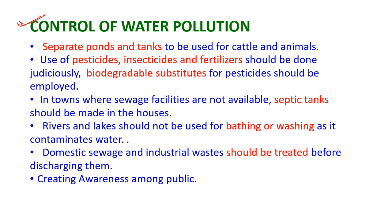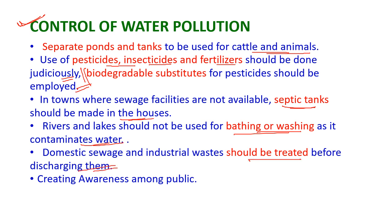Control measures of water pollution: separate ponds and tanks should be used for cattle and animals. Use of pesticides, insecticides and fertilizers should be done judiciously, and biodegradable substitutes for pesticides should be employed. In towns without sewage facilities, septic tanks should be made available. Rivers and lakes should not be used for bathing or washing. Domestic sewage and industrial waste should be treated before discharging into water bodies. Creating awareness among the public is very important.